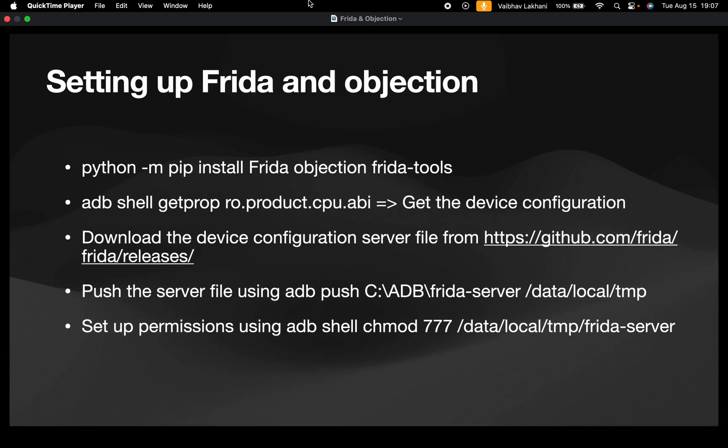In order to set up Frida and Objection, all you have to do is simply run the command: python -m pip install Frida Objection Frida-tools.